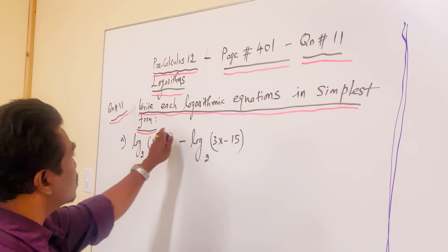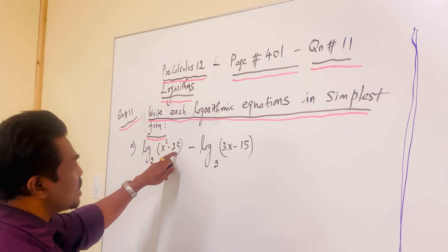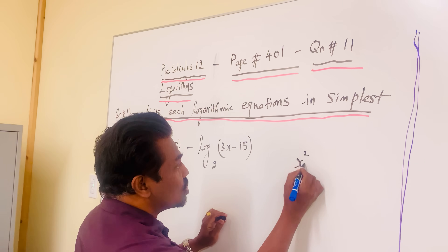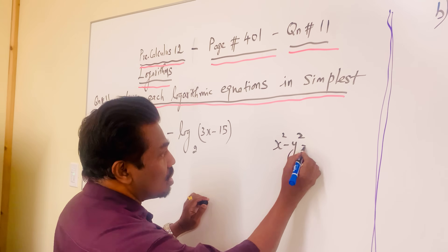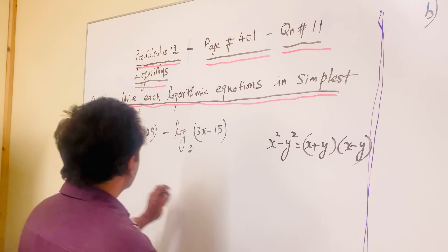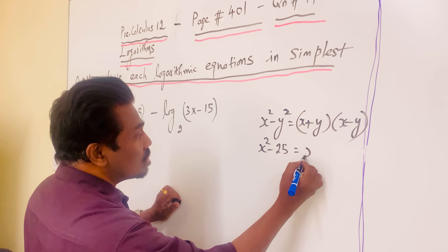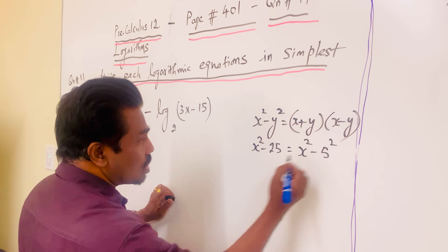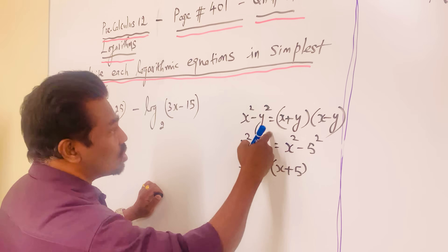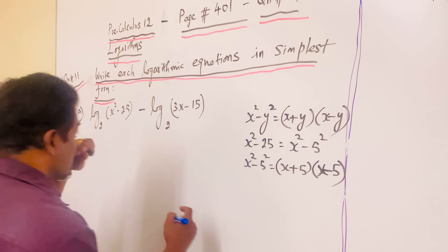Write each logarithm in simplest form. For this type of question we must know one formula: x squared minus y squared equals x plus y times x minus y. For example, x squared minus 25 can be written as x squared minus 5 squared, which equals x plus 5 times x minus 5. That's the only concept here.